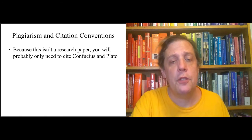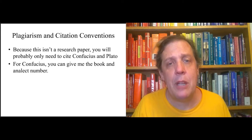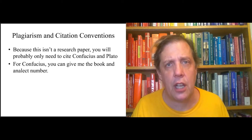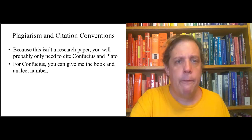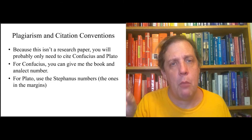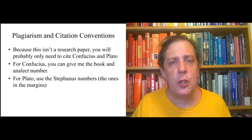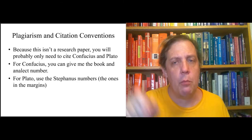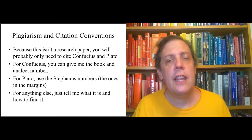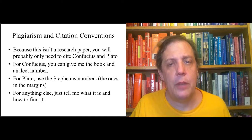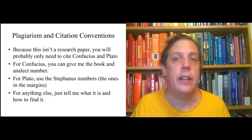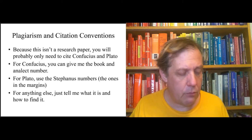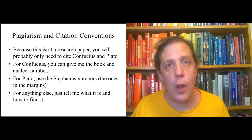Because this isn't a research paper, you will probably only need to cite Confucius and Plato. For Confucius, you can just give me the book and analect number. I'm not going to be really worried about other citation conventions like MLA or Chicago 15B or whatever. For Plato, you need to use the Stephanas numbers — those are the ones that appear in the margins — and I've been using them throughout, so you should be used to referring to passages from Plato by those marginal numbers. For anything else, if it's not your idea, you need to tell me where you got it and how to find it. The purpose of a citation needs to be followed, which is to tell me where your ideas came from in a way that I can follow up on them.